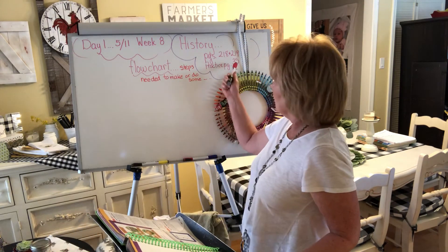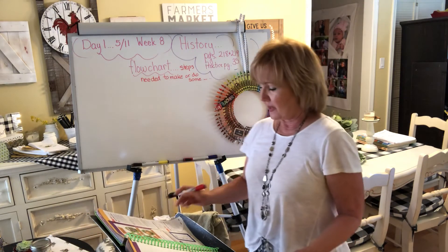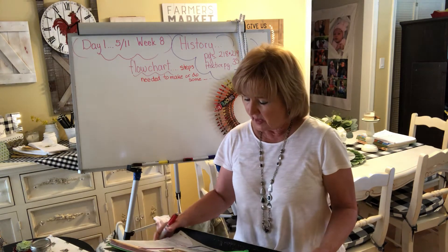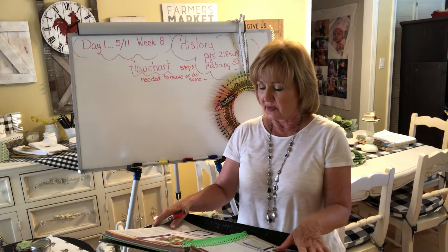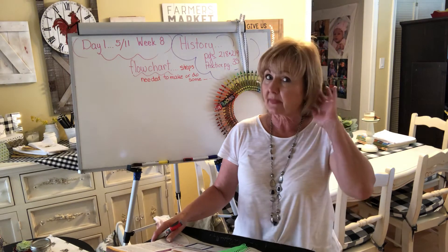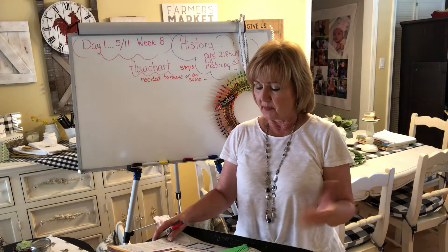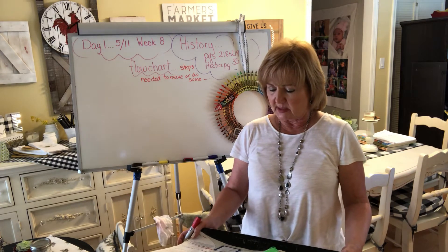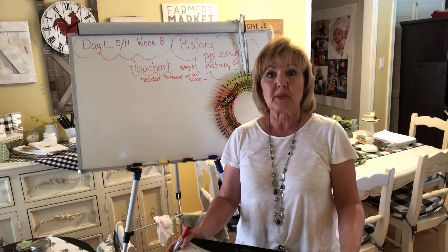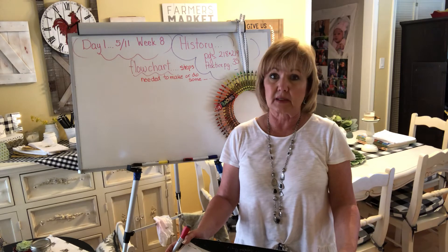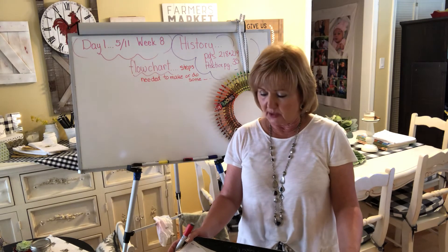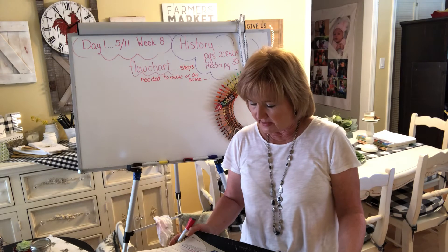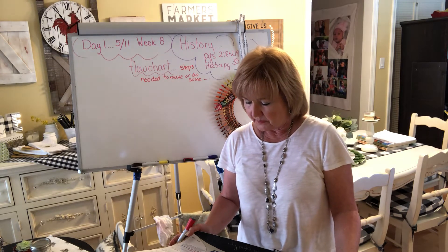Now take a look at practice page 35. We're actually going to complete a flow chart. Who can tell me what this flow chart is about? That's right — from beehive to breakfast table. What do we get from a beehive besides stung if we get too close? We get honey! The first picture is of a beehive.